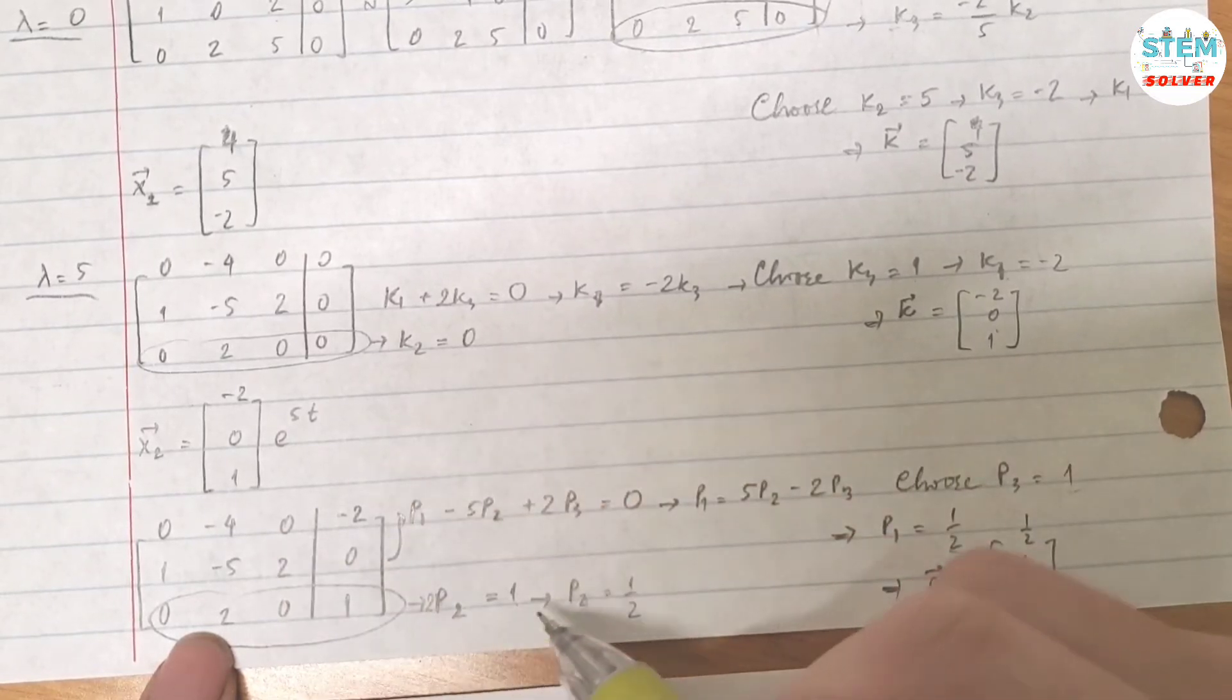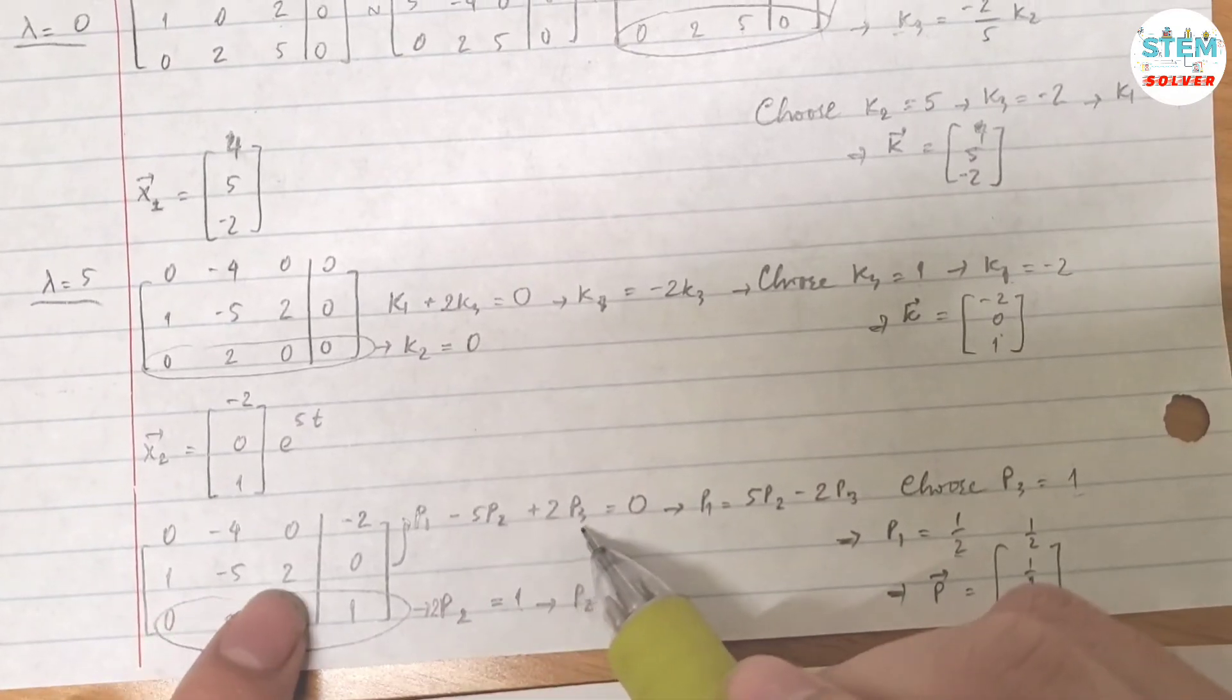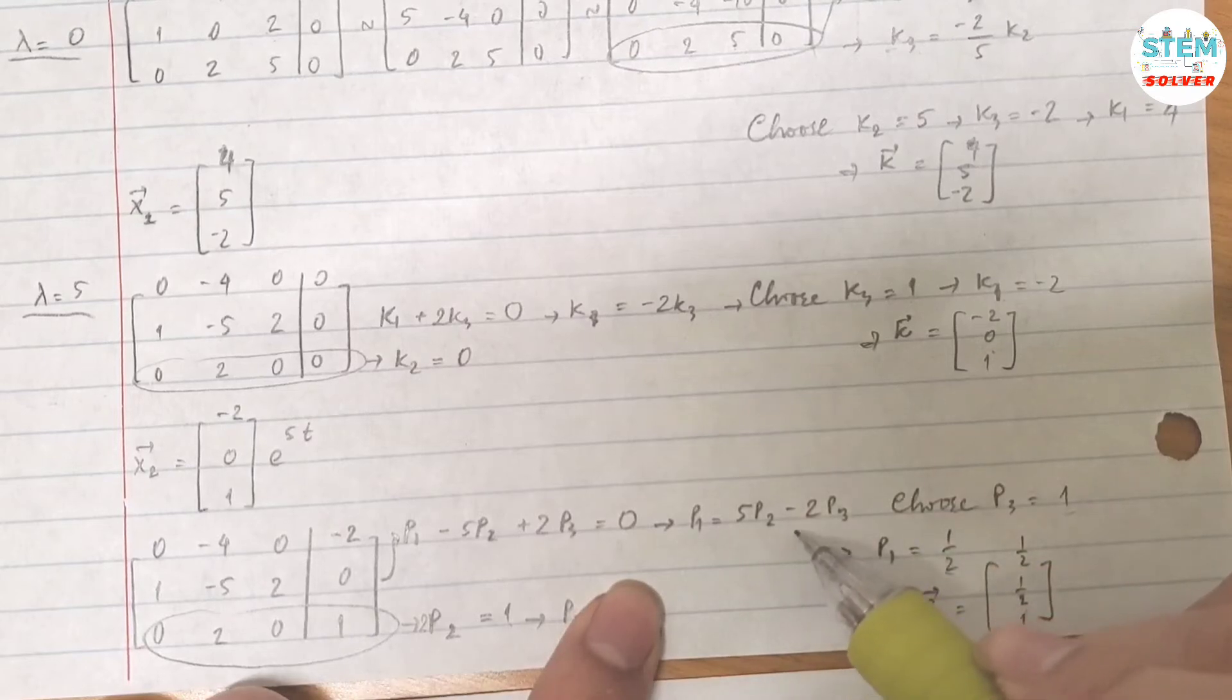Because the first equation will give you the same thing. Use the second equation. You have P1 minus 5P2 plus 2P3 equals 0. Solve out P1. You have 5P2 minus 2P3. If I choose P3 equals 1, then P1 is 1 half.